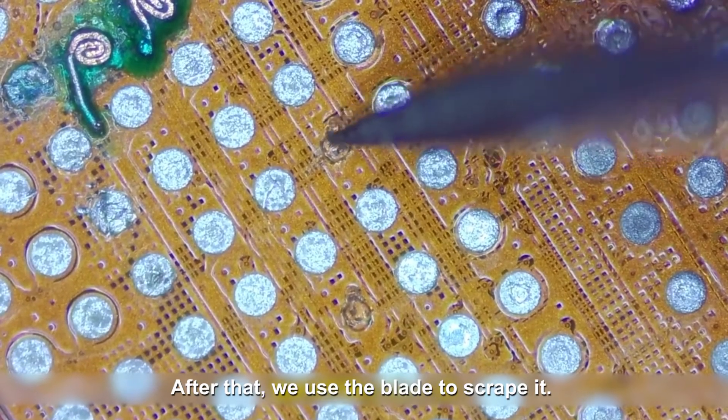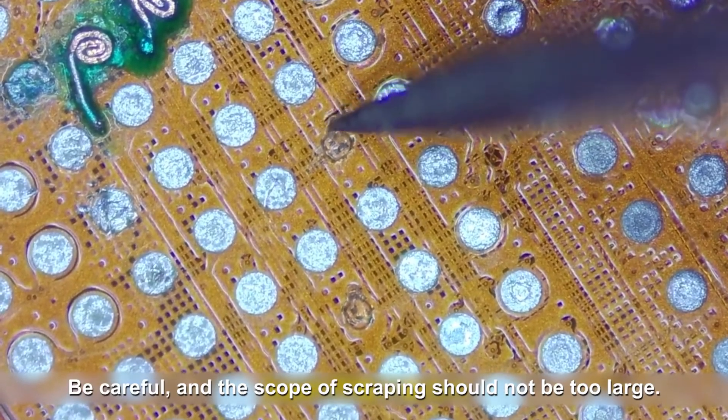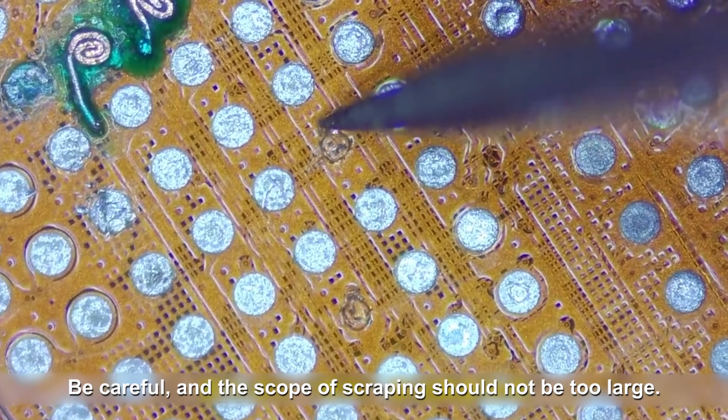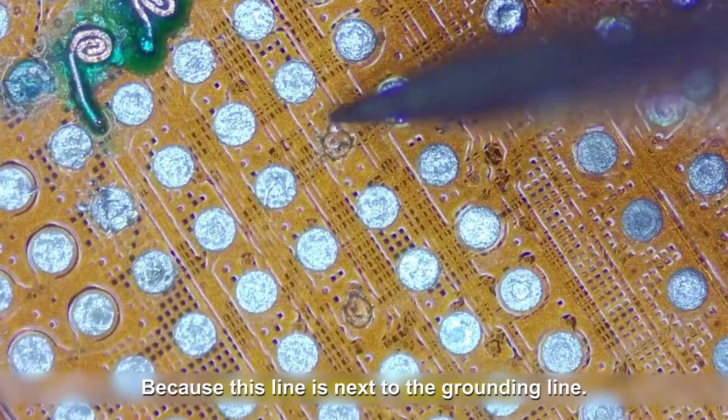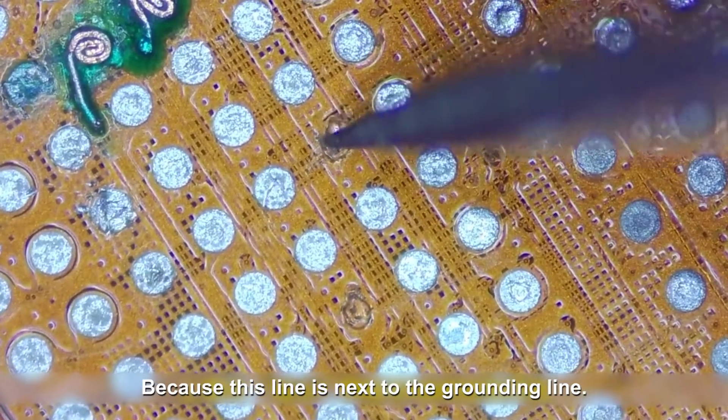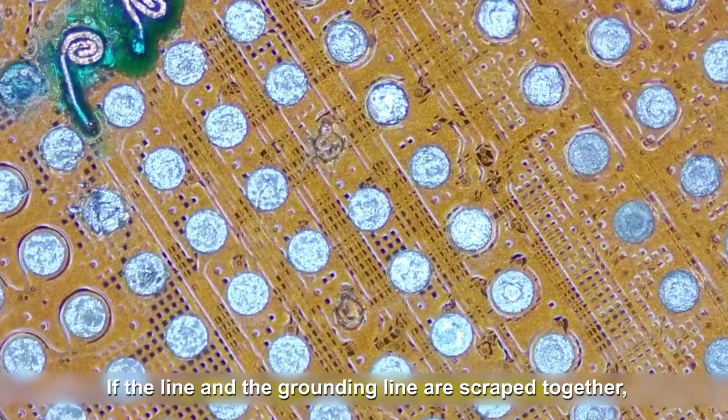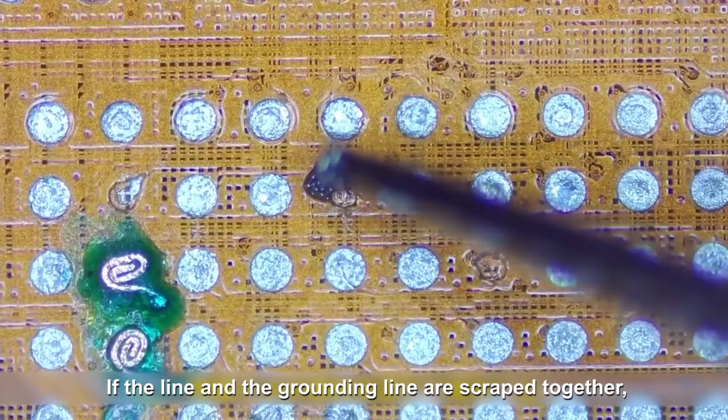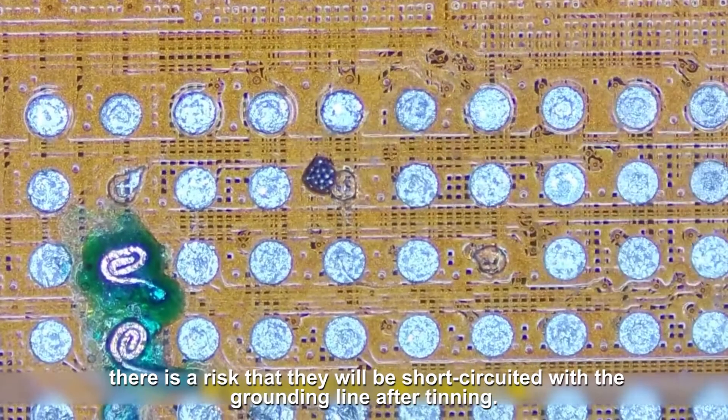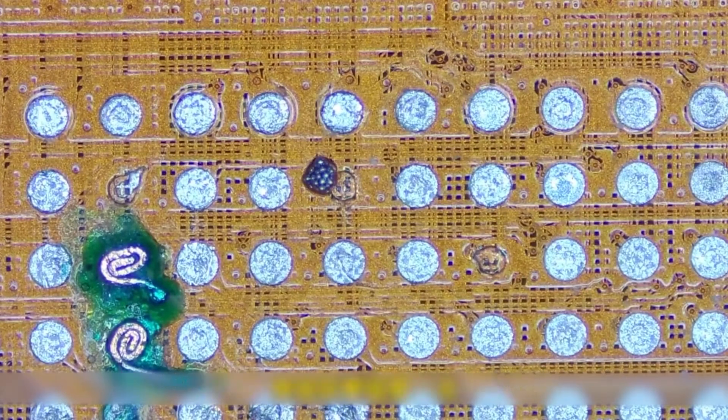After that, we use the blade to scrape it. Be careful, and the scope of scraping should not be too large. Because this line is next to the grounding line. If the line and the grounding line are scraped together, there is a risk that they will be short circuited with the grounding line after tinning.